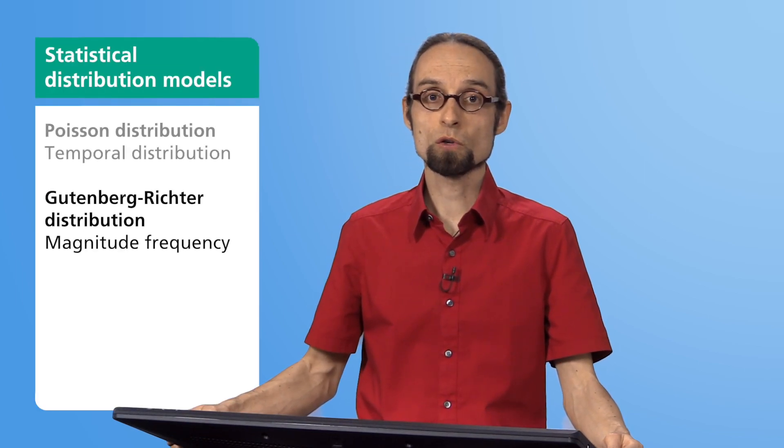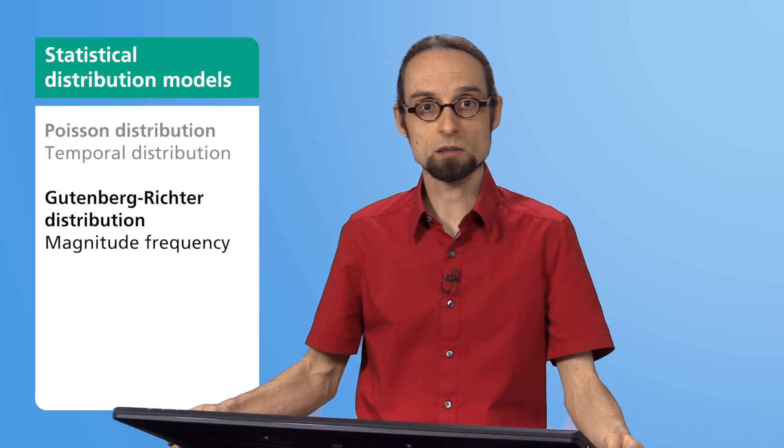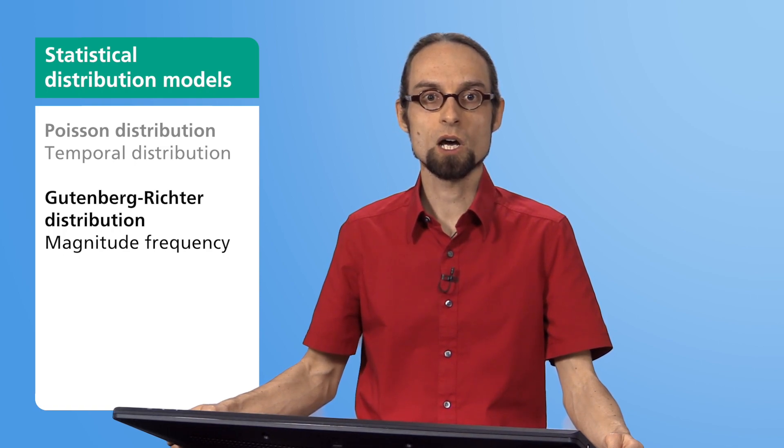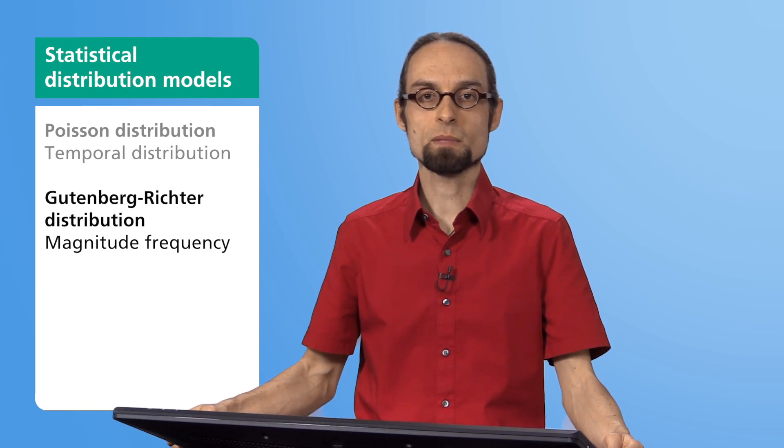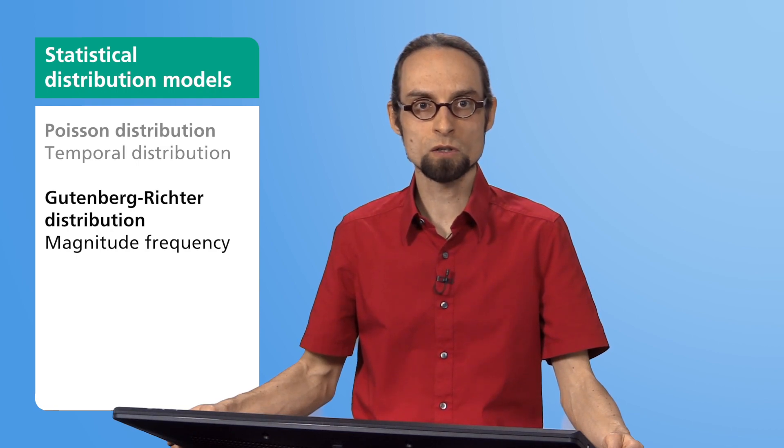The second distribution that I will be introducing was first described by Gutenberg and Richter. For California, these two scientists found the mathematical description for the fact that smaller quakes occur more frequently than large ones. As you will soon see, the same observation can also be made in the Upper Rheingraben.